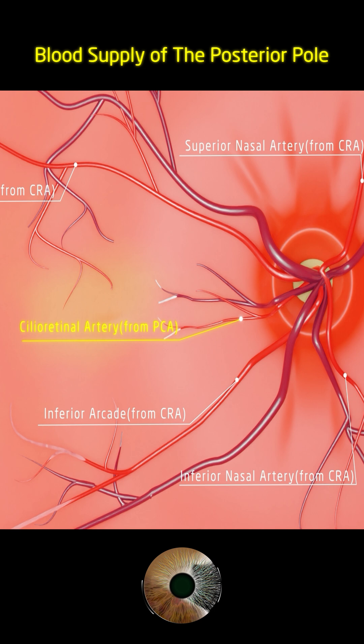The CRA is an end artery — it lacks significant anastomosis and collateral circulation. As a result, occlusion leads to ischemia and results in sudden, profound, painless monocular vision loss.